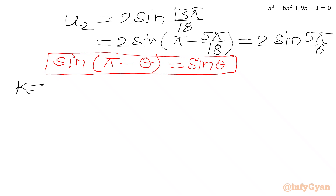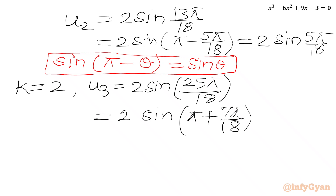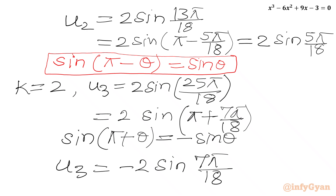For k equal to 2, u₃ = 2 sin(25π/18). We can write 25π/18 = π + 7π/18, and since sin(π + θ) = minus sin θ, we get u₃ = minus 2 sin(7π/18). This is our u₃.